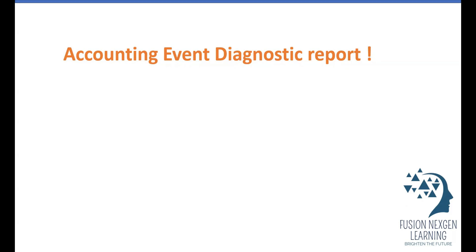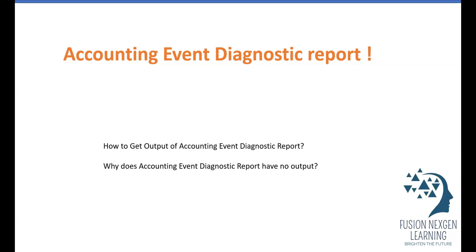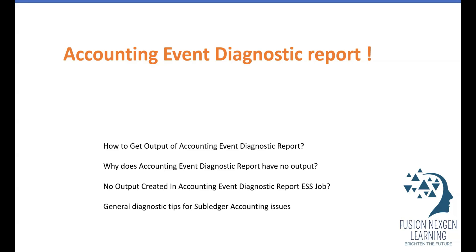We generally have a few questions in mind, and you can get all those answers from this video. First: how to get output of the Accounting Event Diagnostic report if you know the report exists but are unable to get output. Second: what setups need to be done and how to run these reports. Third: why does the Accounting Event Diagnostic report have no output even after successful completion — no output created in the ESS job. Fourth: general diagnostic tips for sub-ledger accounting issues.